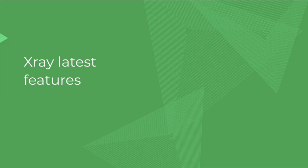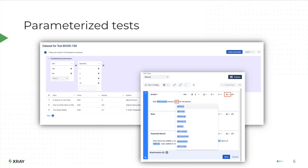Thank you very much, Tony. Before the demo itself, I'll do a brief introduction of the features we developed during 2021, starting with parameterized tests. This is one of the biggest goals we had for this year. This feature is all about abstracting the test specification and allowing you to define parameters within the specification itself of manual test cases, making them agnostic in terms of input and output data. These parameters will later be replaced by their values, which are defined in what we call a data set.